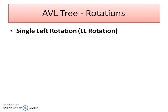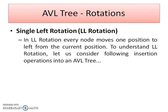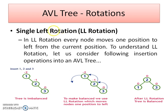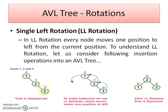Now let us start with the first single rotation, which is the left rotation — that is LL rotation. Before explaining it formally, I would like to explain it with the help of an example. If I insert data in ascending order — 1, 2, 3 — as explained in the previous video, if the data is in ascending or descending order, the tree generated will be an imbalanced tree. Yes, this is a binary search tree, but it is an imbalanced tree. Why is it imbalanced? Because you can see here the balance factor for the root node 1 is minus 2, and minus 2 is not allowed in an AVL tree.